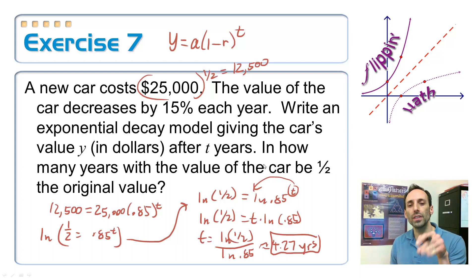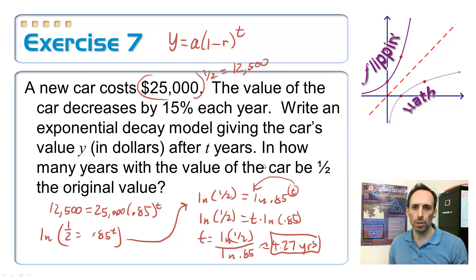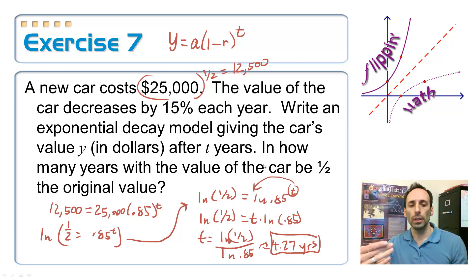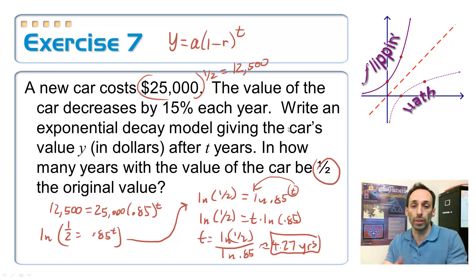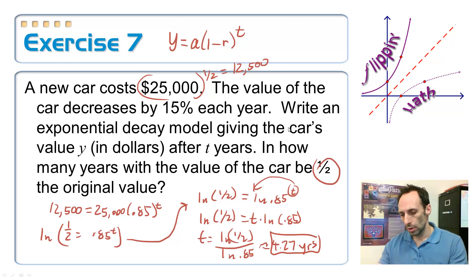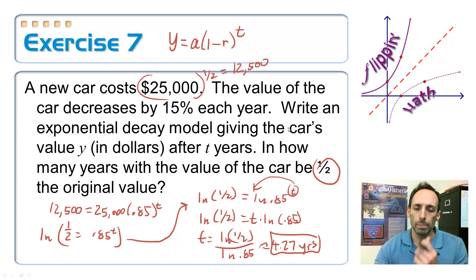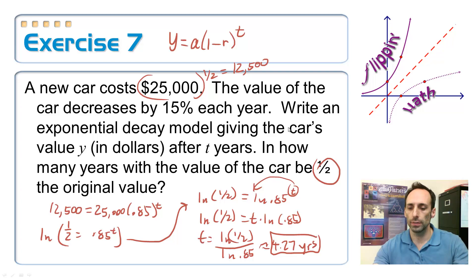If this were a continuously decreasing problem using the PERT model, this is essentially the same concept as half-life in physics — finding the time it takes to have half the amount you originally started with.